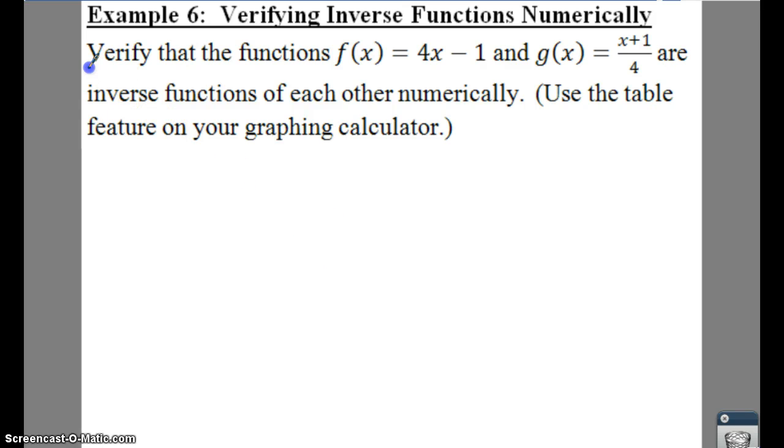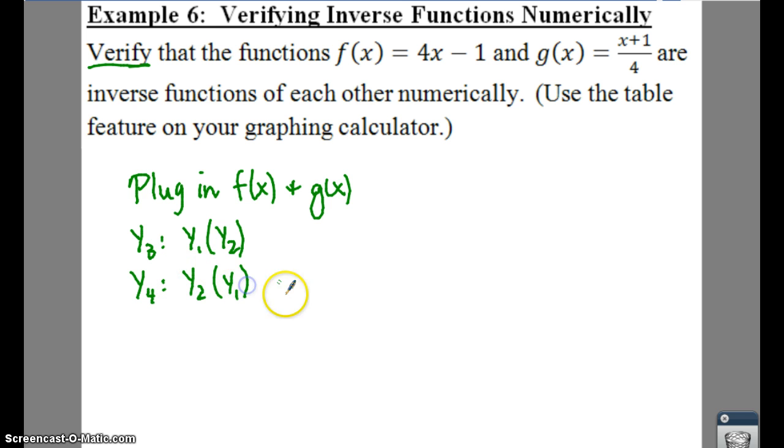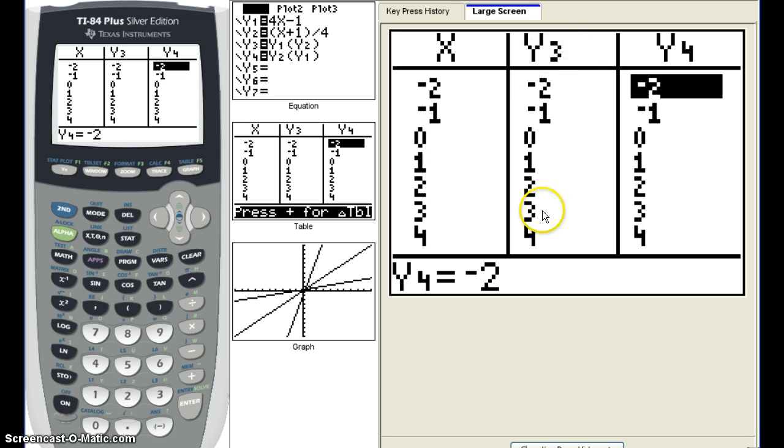What you need to do is plug in your functions f(x) and g(x) in Y1 and Y2. Then in Y3, you need to put Y sub 1 with parentheses Y sub 2 - you've got to use your Y vars. Then Y sub 4 you say Y sub 2 parentheses Y sub 1. If those values are the same when you cursor over in your table, then that means they are inverses.